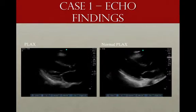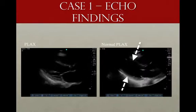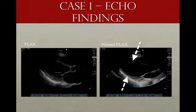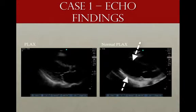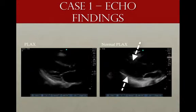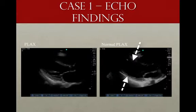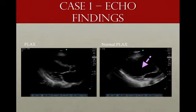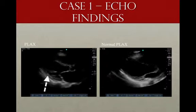Let's compare a normal heart with our patient's heart. On the right, you have a normal heart — the walls of the left ventricle thicken nicely, there's a lot of volume change, and the mitral valve is opening wide and slapping the interventricular septum.